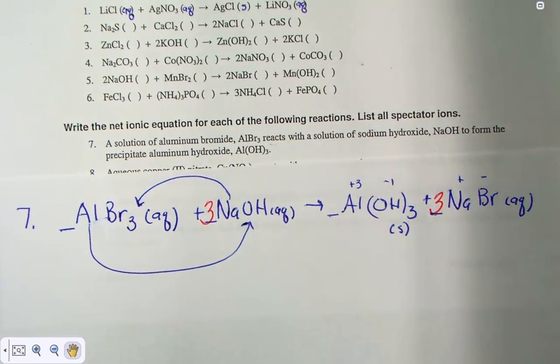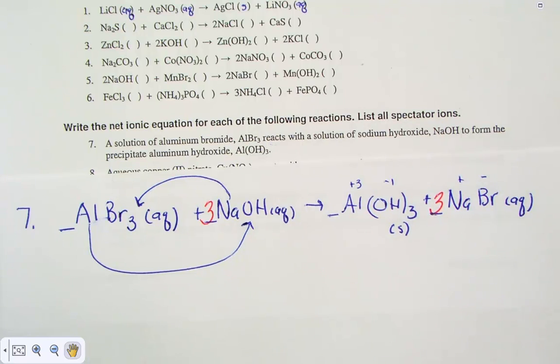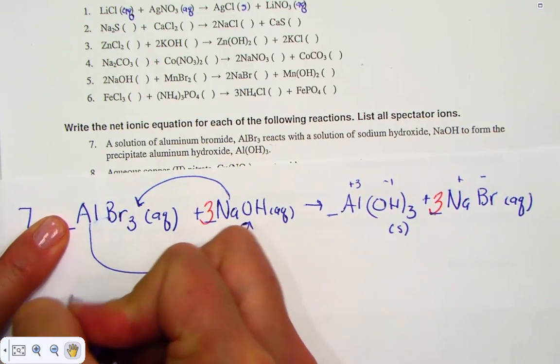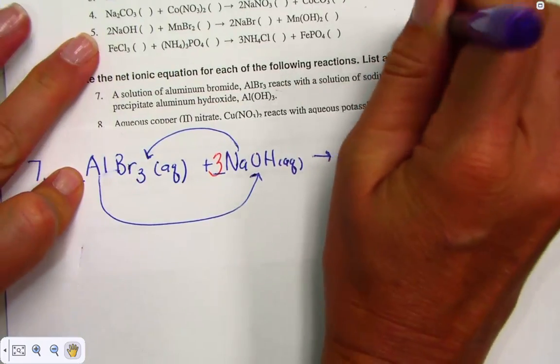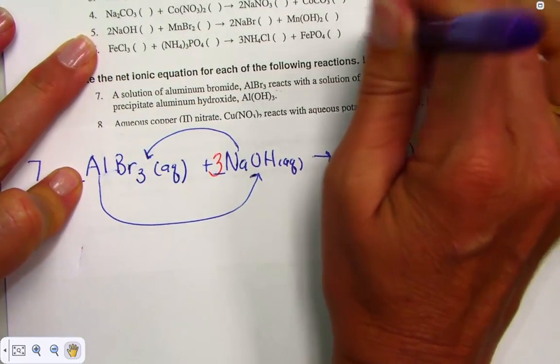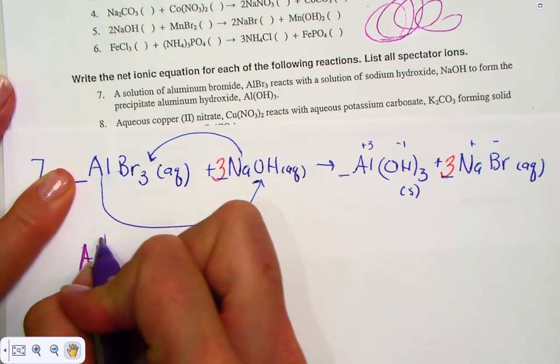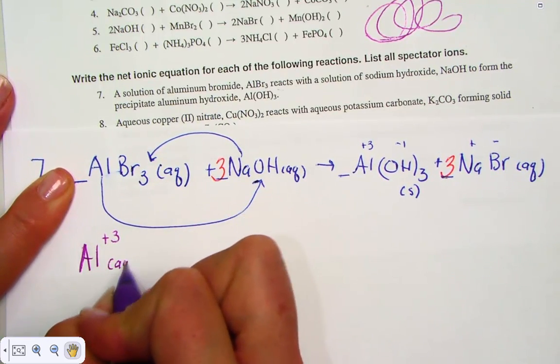Convert this into a complete ionic equation, breaking apart these strong electrolytes, the water soluble salts. We would designate the aqueous ion of aluminum. There it comes: the aqueous ion of aluminum, Al³⁺ AQ.